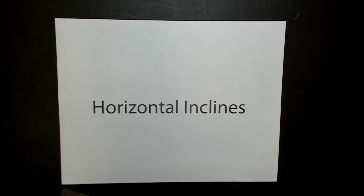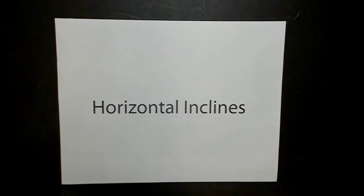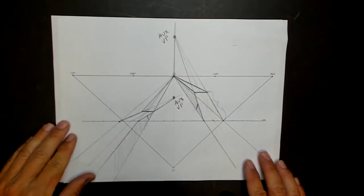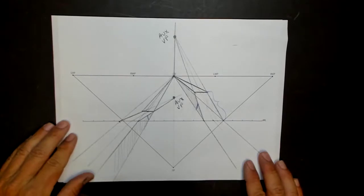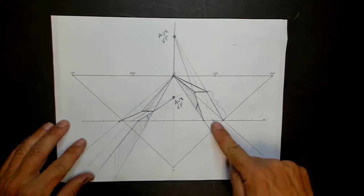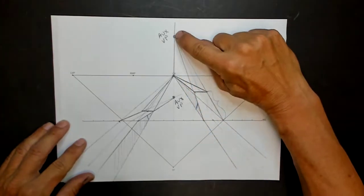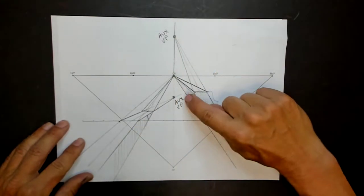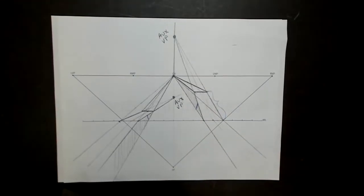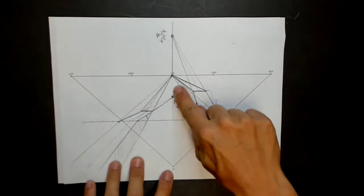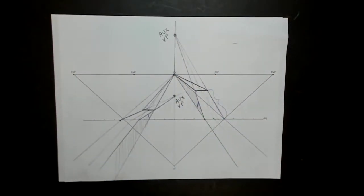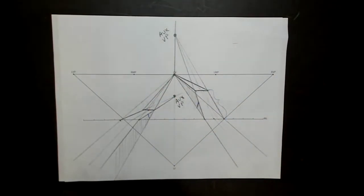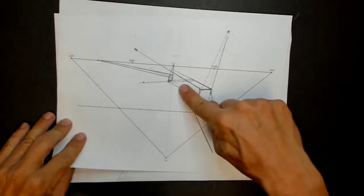So last time we did some one-point perspective inclines. It's pretty intuitive - you have an incline going uphill, then you have a vanishing point up above. Or if it goes downhill, then you have a vanishing point down below. They're almost always aligned with the center vision. If you don't align them with the center vision, you get something that looks like a switchback road.